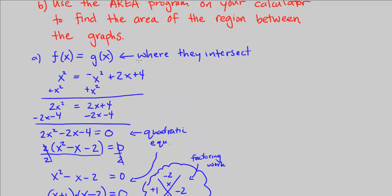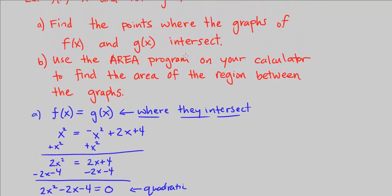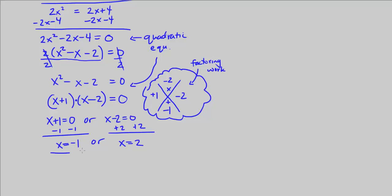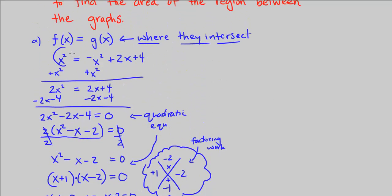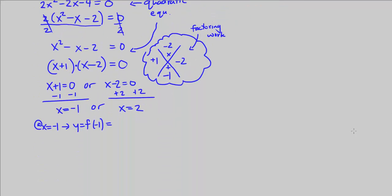This tells me where they intersect. We want to find the actual points — x, y pairs. At x equals negative 1, we find y equals f of negative 1. Since f of x is x squared, f of negative 1 is negative 1 squared, which is positive 1. So this gives us the point negative 1, 1. That's one point where the two graphs intersect.